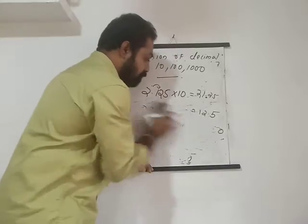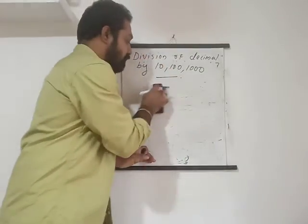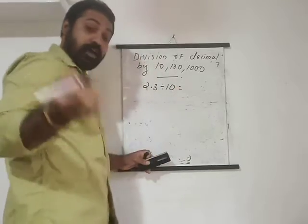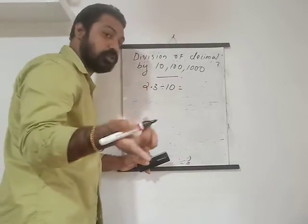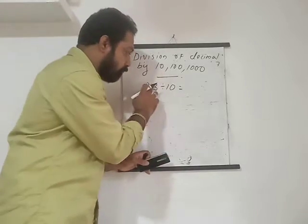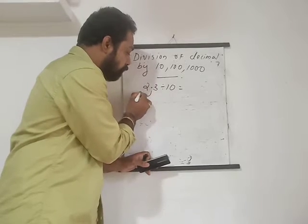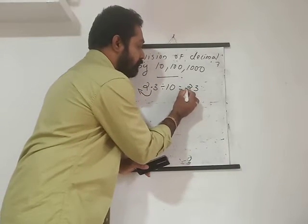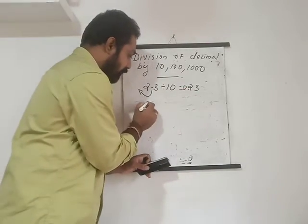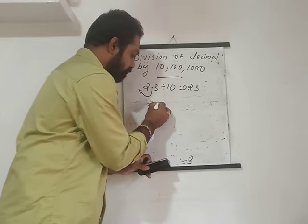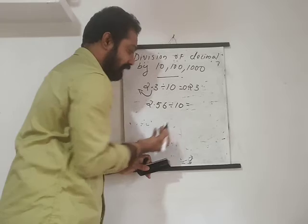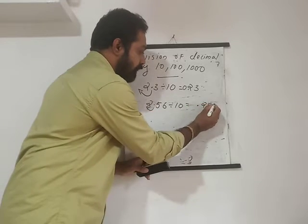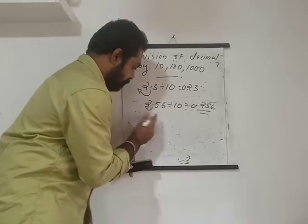When we come to division, the opposite happens. In multiplication, the decimal point moves to the right. In division, the point moves to the left. For example, 2.3 divided by 10: the point moves one place to the left, so it becomes 0.23. Similarly, 2.56 divided by 10: the point moves one place left, giving 0.256.